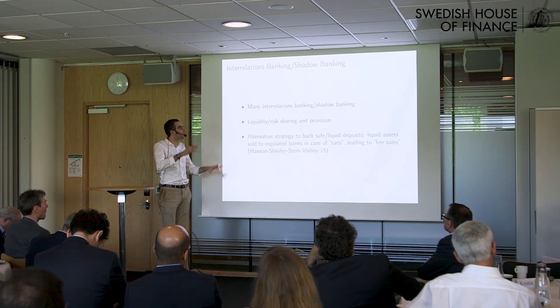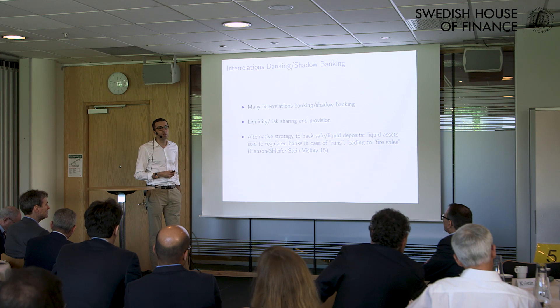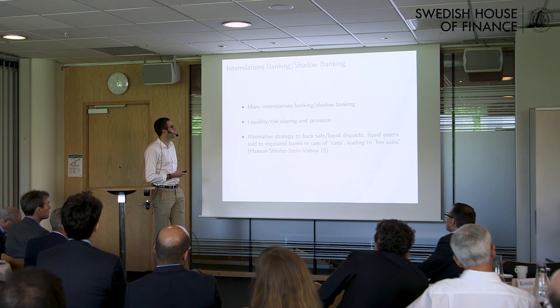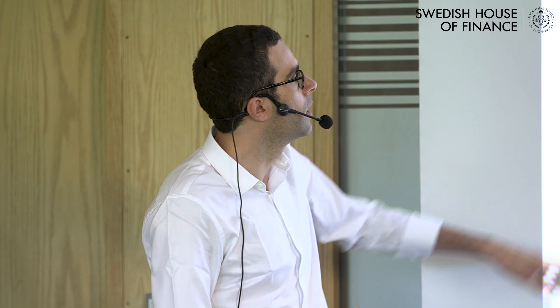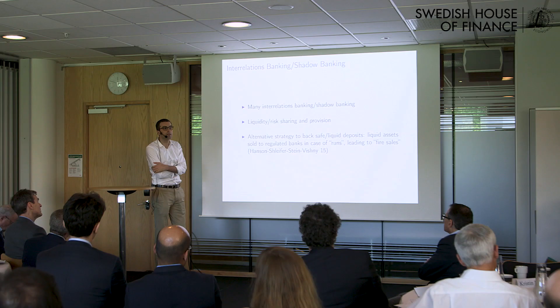Think about banks extending liquidity insurance and credit lines to special purpose vehicles and off-balance sheet entities. Think also about the formal banking system obtaining insurance from entities in the shadow banking sector — like AIG, for example, providing credit default swaps.